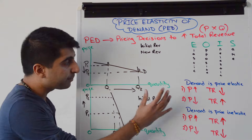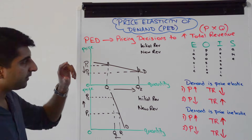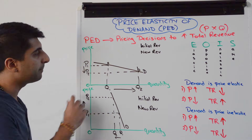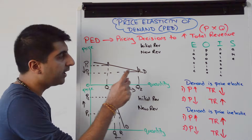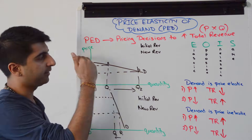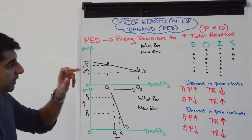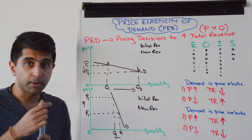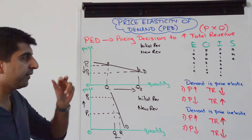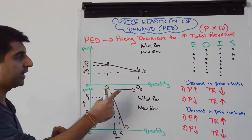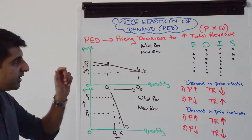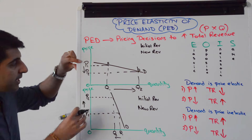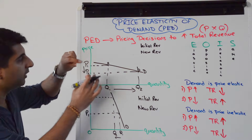We can actually prove these concepts on diagrams. In this top diagram, you can clearly see that demand is price elastic because it's a shallow curve. As we decrease the price, quantity demanded increases proportionally more than the decrease in price — we get to Q2. The initial revenue is P1 times Q1, which gives us the area P1AQ10.